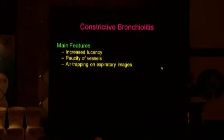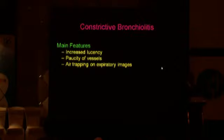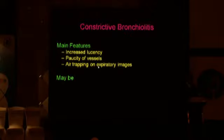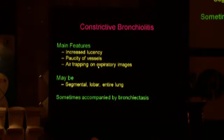Constrictive bronchiolitis is a condition that radiologists often tend to ignore, but it is an extremely important accompaniment to interstitial lung diseases as well as to bronchiectasis. We should learn to recognize it in every patient presenting with diffuse lung disease. The key findings are: areas of increased lucency, paucity of vessels, and air trapping on expiratory images, which may or may not be associated with bronchiectasis, with involvement that may be segmental, lobar, or of the entire lung.